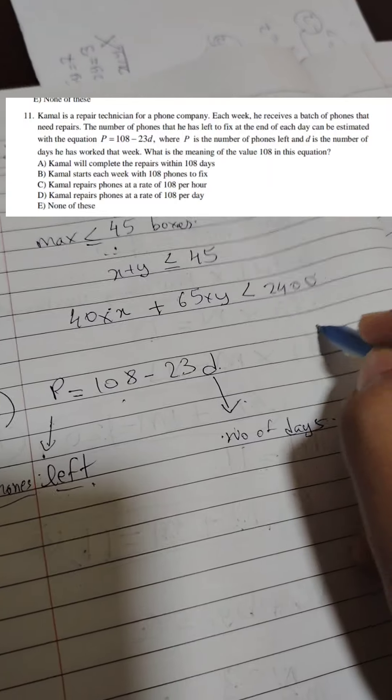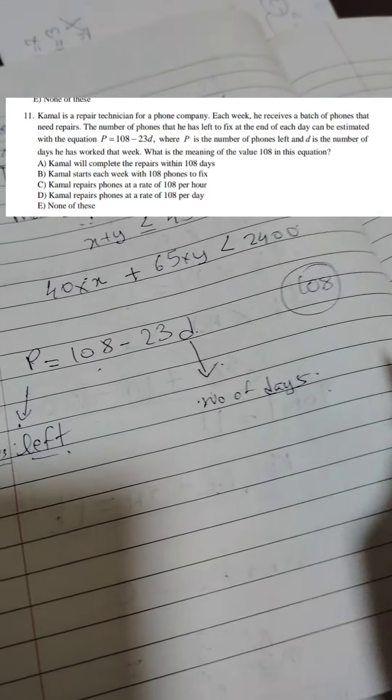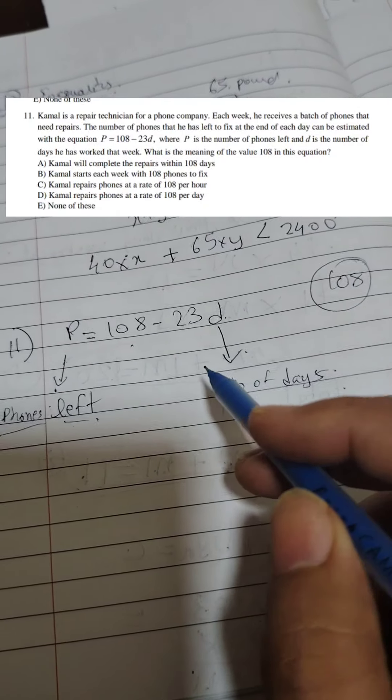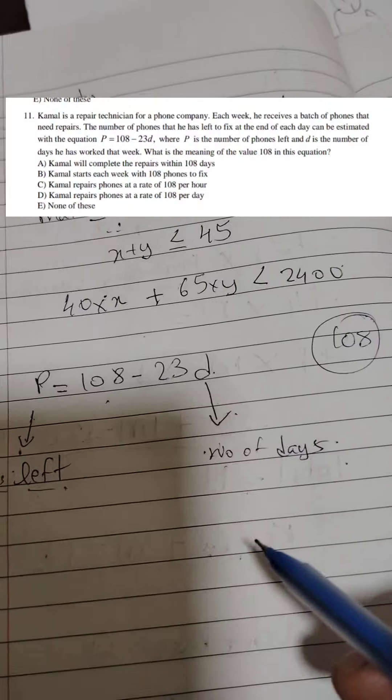Now, interestingly, they asked what does 108 mean? They are not asking us the value of P or D. That's a very interesting question because what does 108 mean? There's like a list of five options, as you can see on the screen.